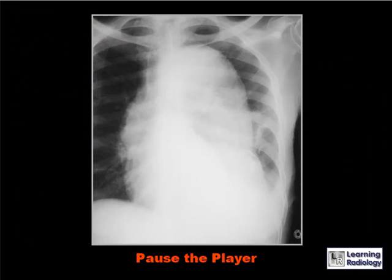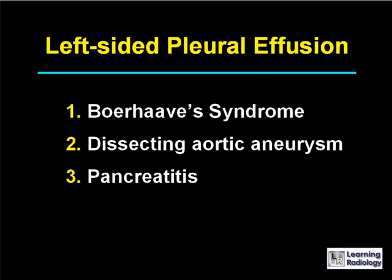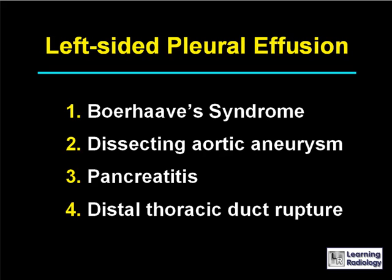Here's the next differential. The differential is for left-sided pleural effusions. There are four causes. The four causes of a left-sided pleural effusion can include Boerhaave syndrome, a dissecting aortic aneurysm, pancreatitis, or a distal thoracic duct rupture.